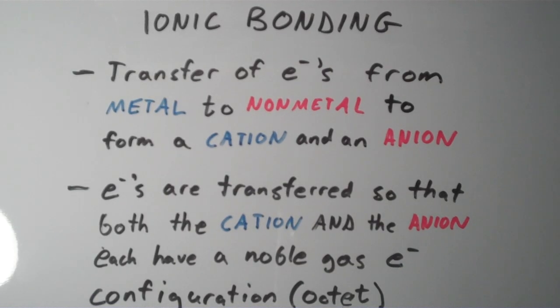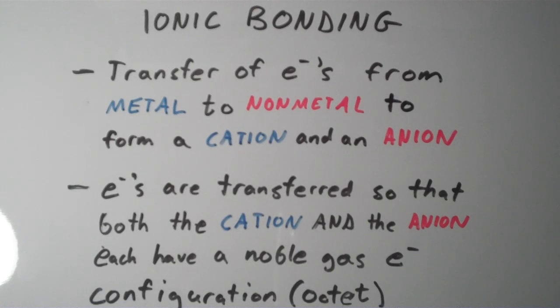And remember that ionic bonding is the transfer of electrons from a metal to a non-metal to form a cation and an anion. The cation is a positively charged ion that comes from the metal, and the anion is a negatively charged ion that comes from the non-metal.